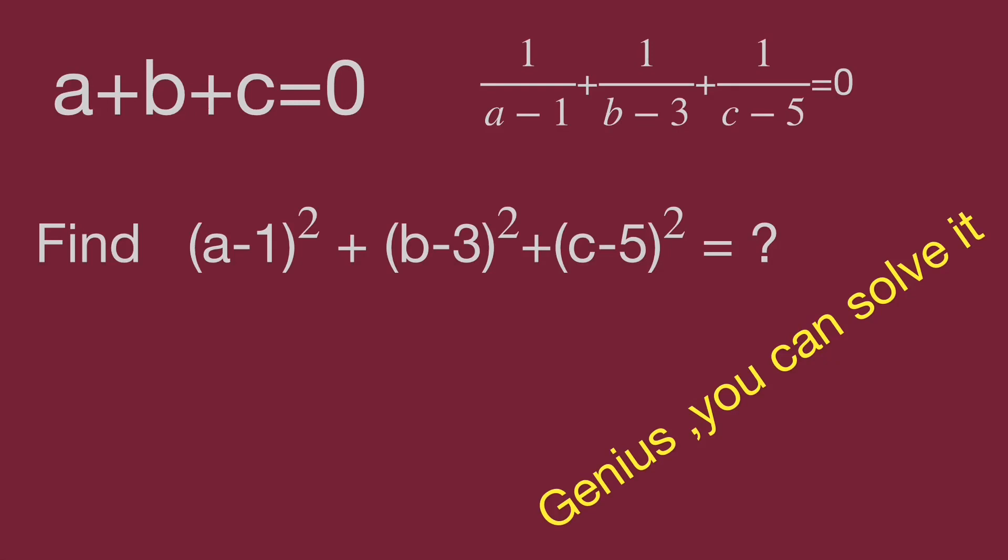and one over a minus one plus one over b minus three plus one over c minus five equal to zero. Utilize mathematical operations to find the value of quantity a minus one squared plus quantity b minus three squared plus quantity c minus five squared.